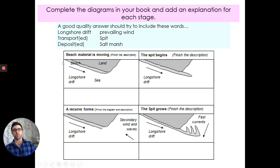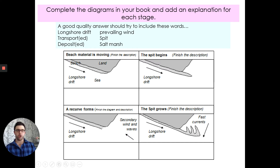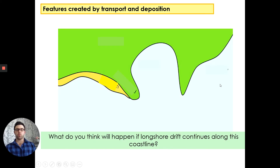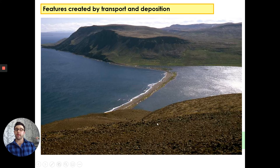Here are the diagrams you're about to complete with a short explanation. A good quality answer should include the terms: longshore drift, prevailing wind, transported, deposited, spit, and salt marsh. You can see the longshore drift building the spit, then draw the diagram to show the secondary wind and the recurves forming a comb pattern as the wind direction changes.